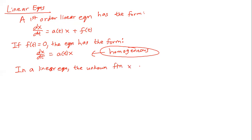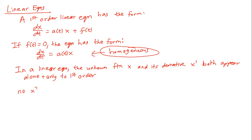In a linear equation, the unknown function x and its derivative x' both appear alone and only to first order. So there will be no x² or x·x' terms. You can have things like x' = sin(t)·x — that's okay because the nonlinearity is only in t. But x' = sin(x)·t is a problem because x is the argument of the sine, making it nonlinear.